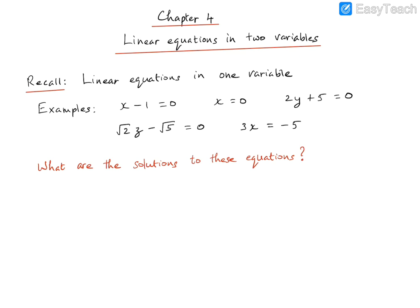From these equations we can find their solutions. The solution is basically what value of the variable, when substituted, will satisfy the equation. So what value of X, if you put in here, will this equation be satisfied? In this case, X equal to 0 is itself a solution. For the Y equation, what value of Y will satisfy it? That means what should we put in place of Y so that when we solve this expression it gives us 0.